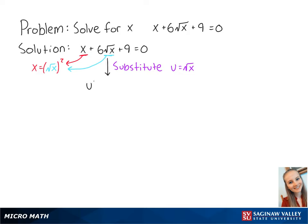So now we have u squared plus 6u plus 9 equals 0.